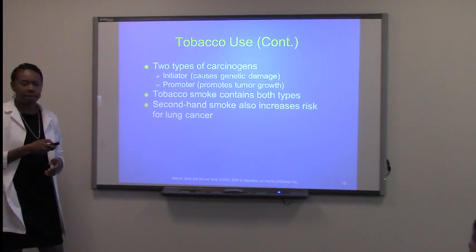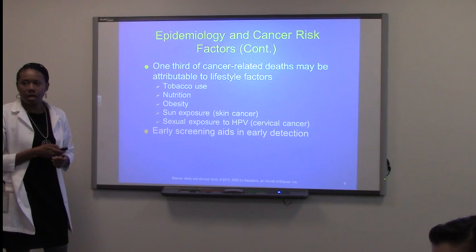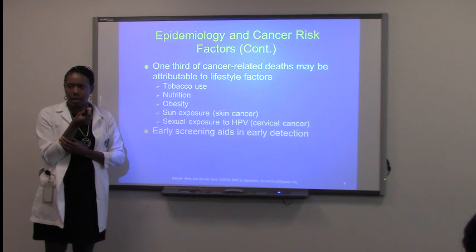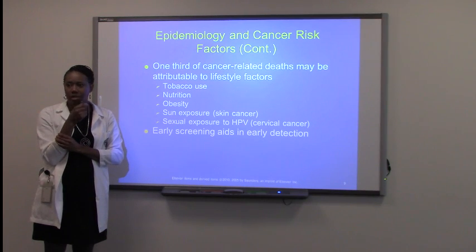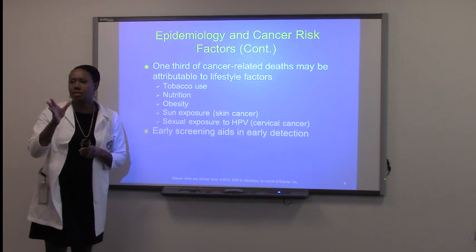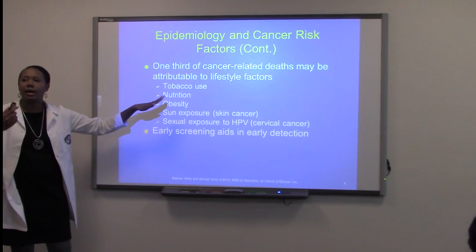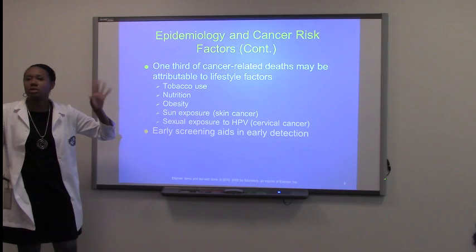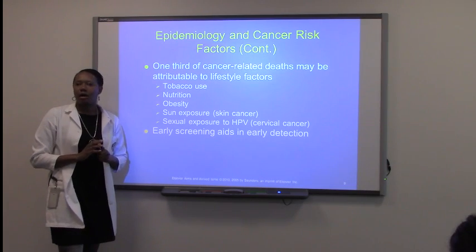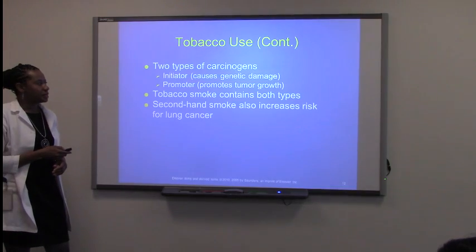Regarding tobacco — chewing versus smoking: most studies are from the burning of tobacco. Chewing could possibly cause issues, but may not have the same number of carcinogens as when you light it. Tobacco in general is the issue; anything tobacco-formed is the concern. Tobacco actually has two types of carcinogens: the initiator, which causes genetic damage, and the promoter, which causes tumor growth — a double whammy, which is why anti-smoking campaigns are so important.